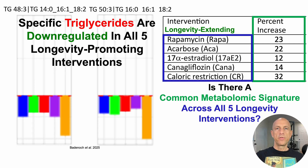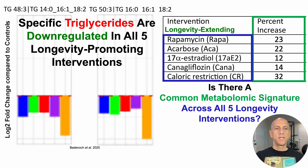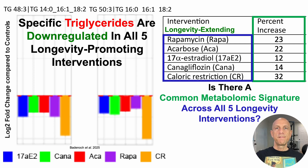Similarly, on the right, we've got TG-53, 50 carbons and three double bonds. It has the same two latter fatty acids, but the first fatty acid is different, as that's palmitate. On the y-axis, we've got the log two-fold change when compared with controls, so relative levels for each of the five interventions. Each of the five interventions are color-coded on the x-axis.